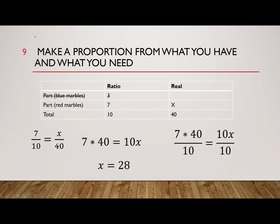7 red to 10 total equals how many red to 40 total? 7 times 40 equals 10 times X. Divide both sides by 10. You can divide the 40 by 10 first. X is 28. There would be 28 red marbles in that group.